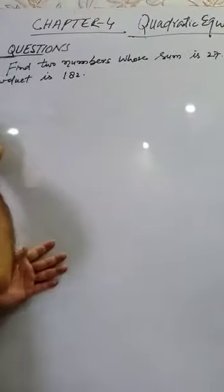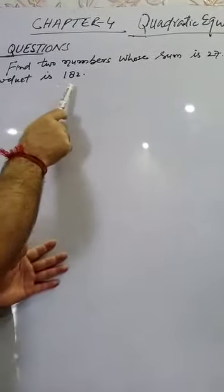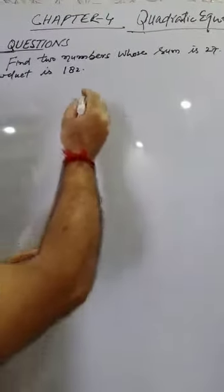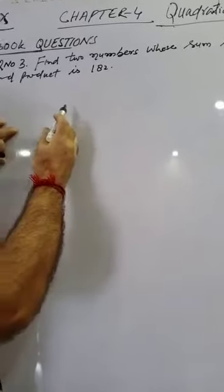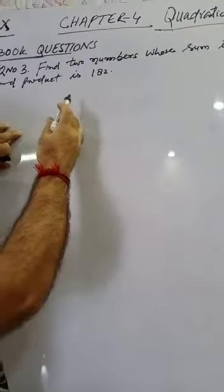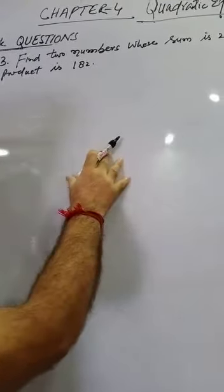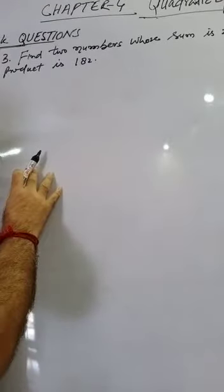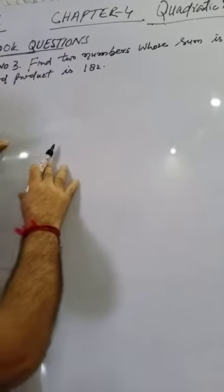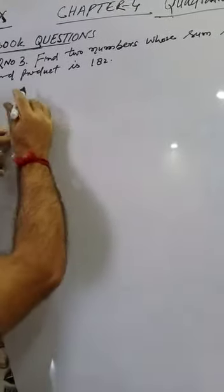Find two numbers whose sum is 27 and product is 182. Their sum is given as 27 and their product is 182. First of all, we will present it as a quadratic equation, then we will solve it by the factorization method. So let us take the solution.